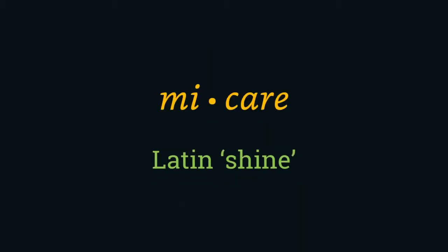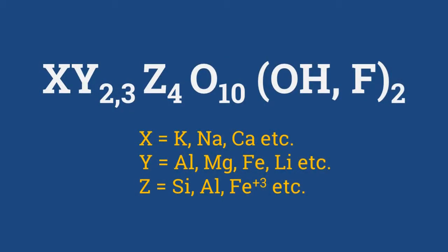Mica's name is probably derived from the Latin word 'mica' meaning 'to shine', since muscovite, the most common mica, has a pearly and somewhat metallic luster. The chemical composition of mica is X Y(2,3) Z4 O10 (OH or F)2, where X is mainly potassium and sometimes sodium or calcium.